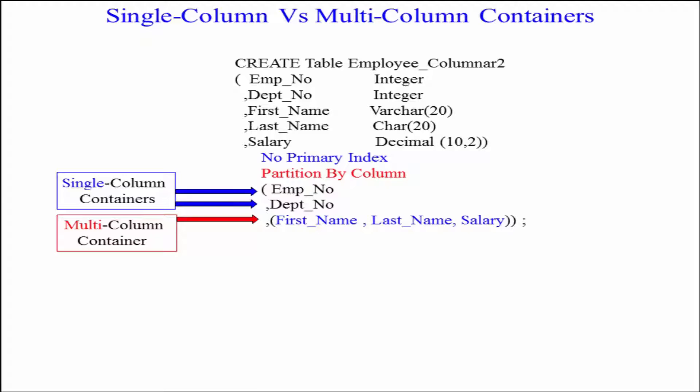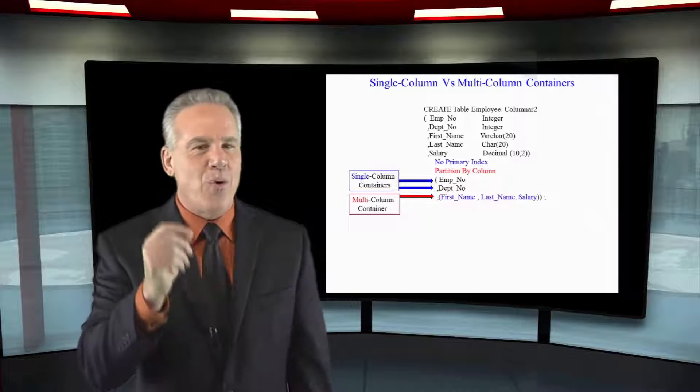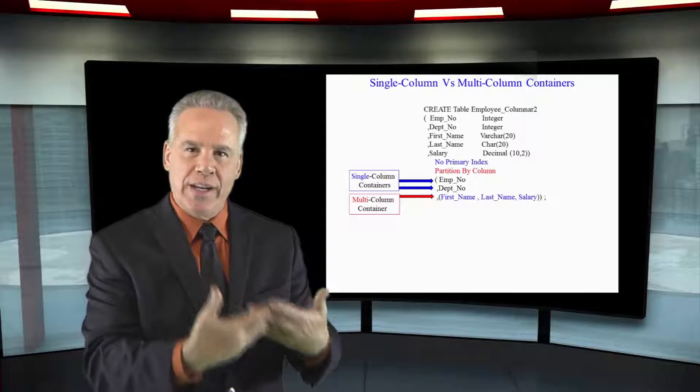First name, last name, and salary are going to be in the same container. Quite often we might do this if those are queried together.